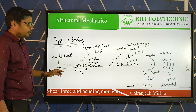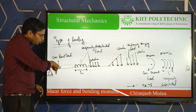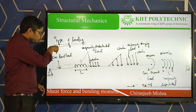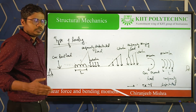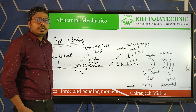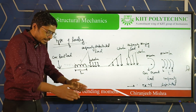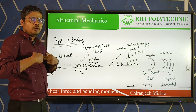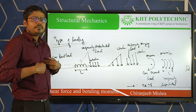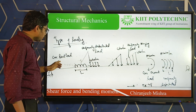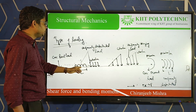What do you mean by a concentrated point load? It means the load is acting at one single point on the beam. For example, if I am standing on a beam, my load acts at one point — that is a concentrated point load.